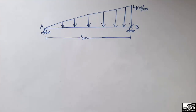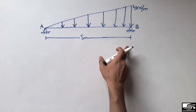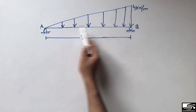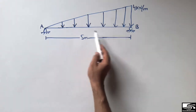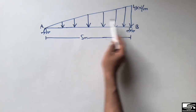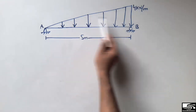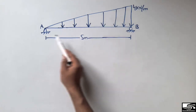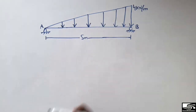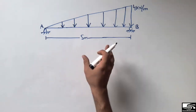Hello guys, welcome back to the Seven Engineering YouTube channel. Please subscribe for daily Seven Engineering videos. Today I'm going to analyze a simply supported beam with a triangular load. As you can see, the shape of the load acting on this beam is like a triangle, so this is not a uniformly distributed load — we say a triangular load is acting on the simply supported beam.